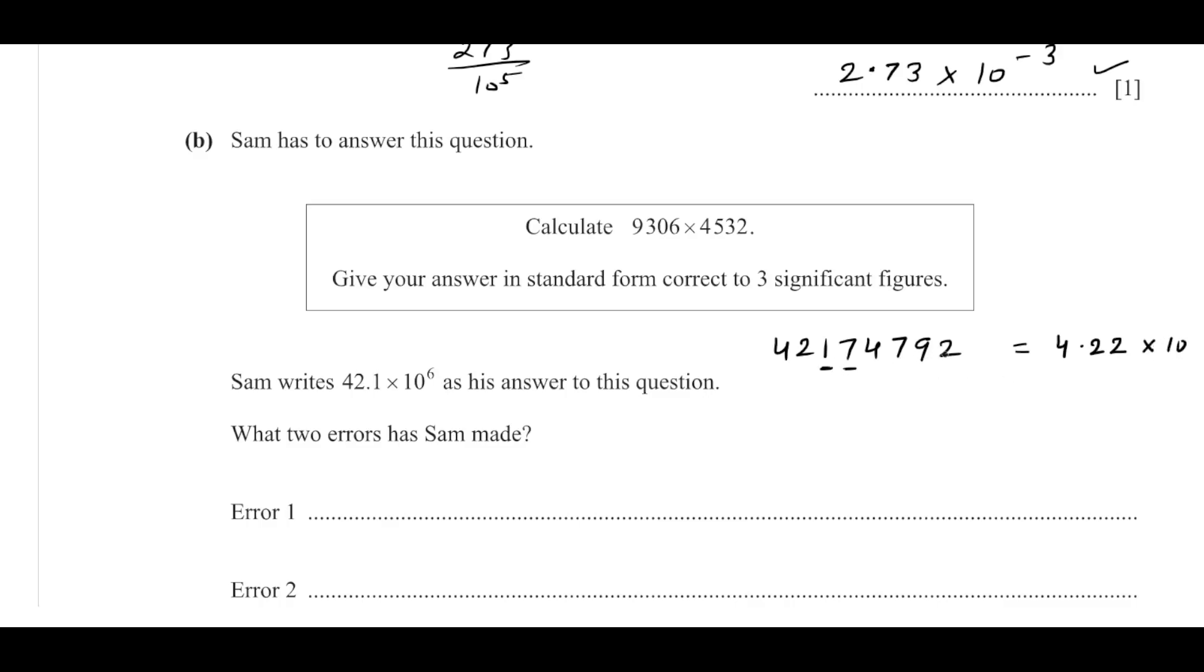Now here, 1, 2, 3, 4, 5, 6, 7, so 10 power 7. 4.22 into 10 power 7. Now Sam writes this as 42.1 into 10 power 6 in his answer.